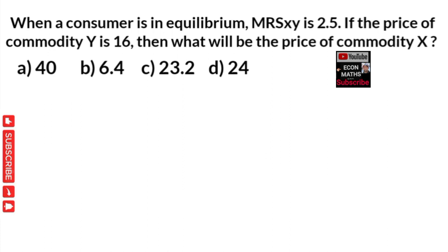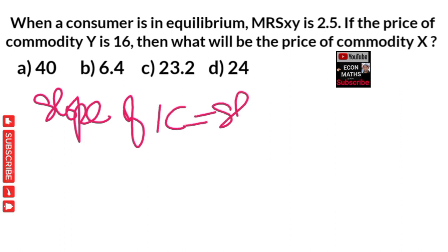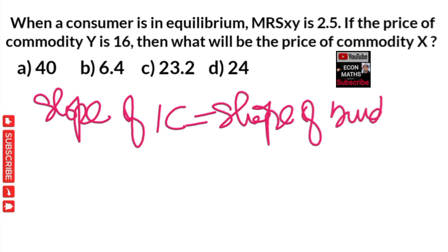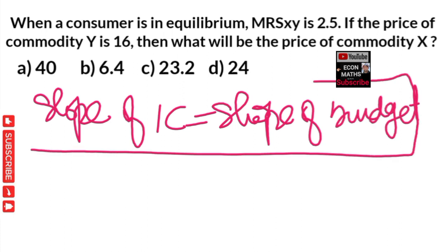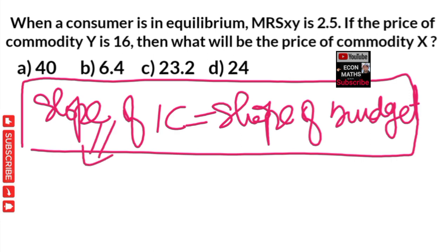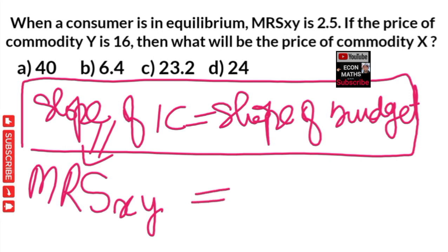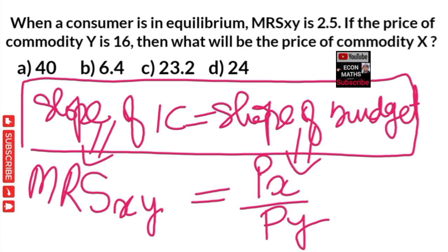First of all, we know that the consumer is in equilibrium when the slope of the indifference curve is equal to the slope of the budget line. This is the condition for the consumer to be in equilibrium. The slope of the indifference curve is simply the marginal rate of substitution between X and Y, and it should be equal to the slope of the budget line, which is the ratio of prices — price of X divided by price of Y.